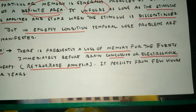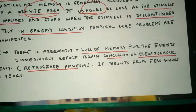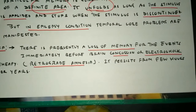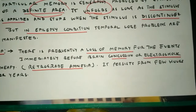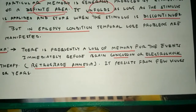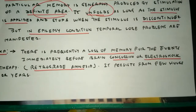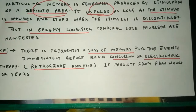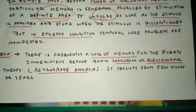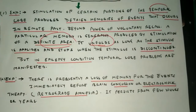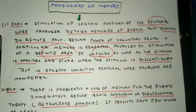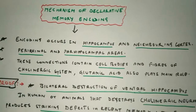The second type of evidence is the frequent loss of memory for events immediately before brain concussion or electroshock therapy. Electric shock is a type of therapy used to affect brain memory, and this loss is called retrograde amnesia. In electroshock, sometimes memory is lost but is recalled within a few days or even hours. This evidence explains how memory actually works.